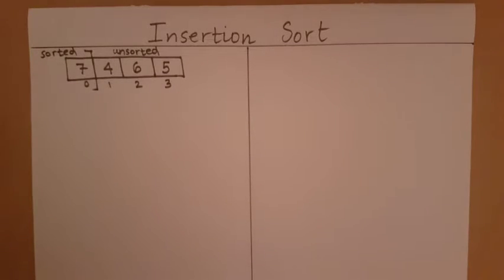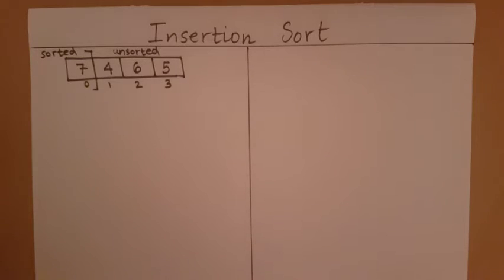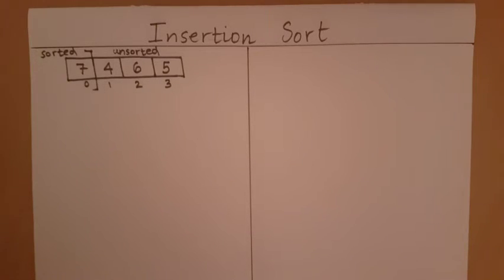Insertion sort includes elements from the unsorted array into the sorted array one by one. First it will include four, then six, then five. The question is: how is it going to include elements of the unsorted array into the sorted array in a sorted fashion?